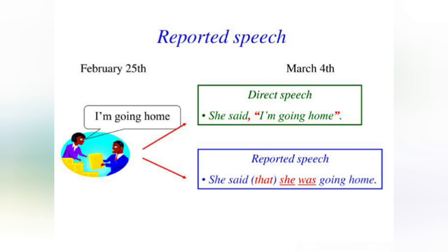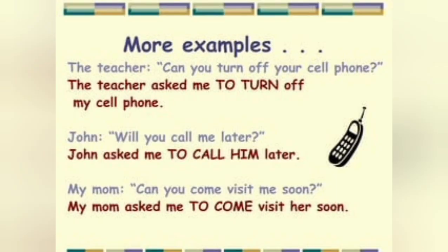More examples. When I have in the direct speech 'I'm going home,' when I report this, I'm going to change the present continuous into the past continuous. She said that she was going home. So as we said, when the reporting verb is in the simple past, we change the tenses: from present to past, from past to past perfect, from present continuous to past continuous.